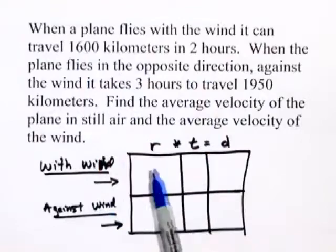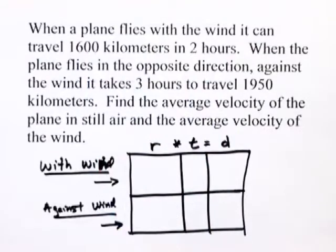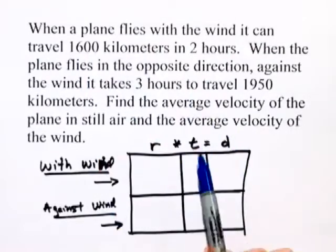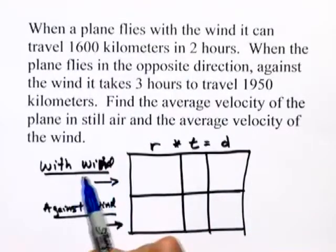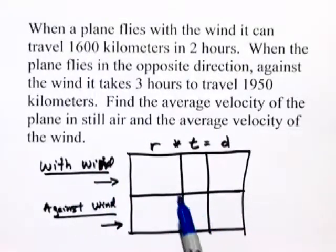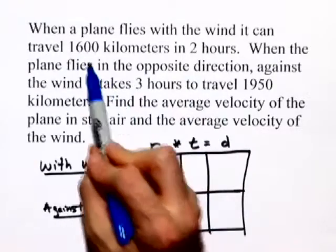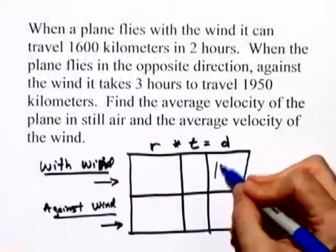So I made a table so we can see the formula and put all this information in to organize it. Now remember, the formula is distance equals rate times time. What we want to do is look at the two circumstances here, with the wind and against the wind. When the plane is flying with the wind, it can travel 1,600 kilometers. So that's our distance.